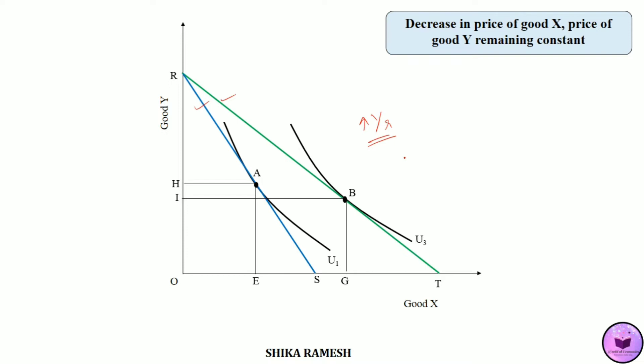Initially the consumer was purchasing OE amount of good X, but due to the decrease in the price of good X with the price of good Y remaining constant, the consumer has purchased an additional EG amount of good X. This additional EG amount of good X represents the price effect.